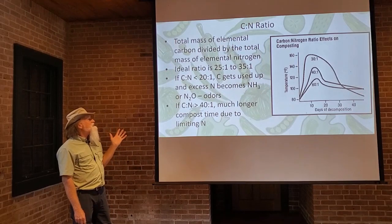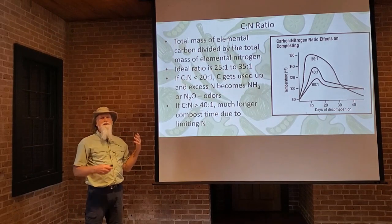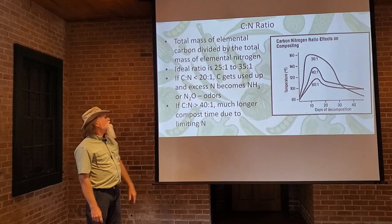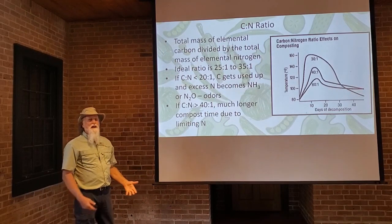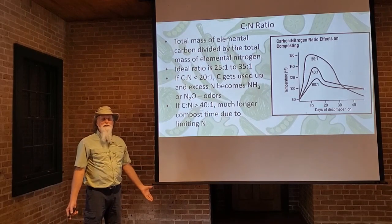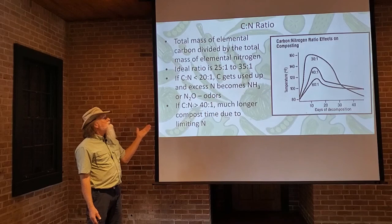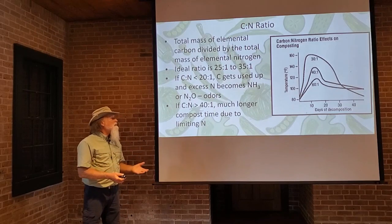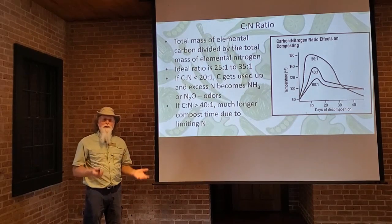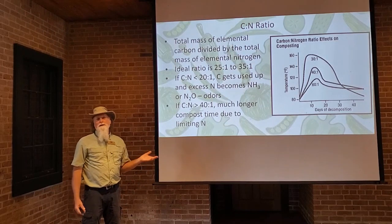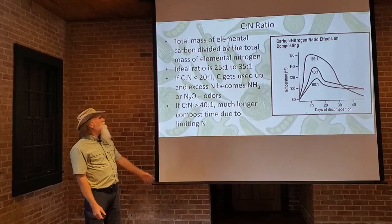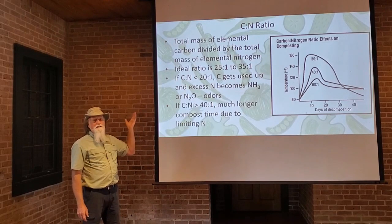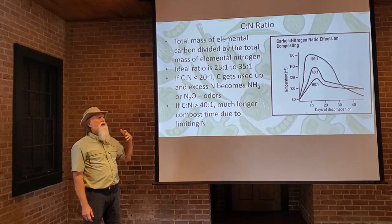If the carbon-nitrogen ratio is less than 20:1, that means you've got a lot more nitrogen in comparison to the carbon. The carbon gets used up really fast for energy and for building blocks, and the organisms run out of carbon. You have excess nitrogen still hanging around, and it begins to be formed into ammonia and nitrates, or other things that give off odors. In a later module we'll talk about troubleshooting your compost pile — if you have a smell of ammonia, one reason could be that your carbon-nitrogen ratio is too low, so you'll need to add carbon to solve that.